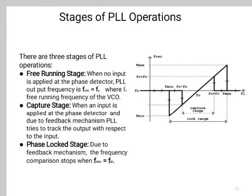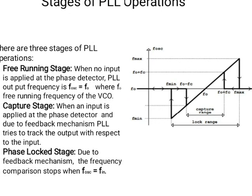Stages of PLL operation. There are three stages: free running stage, capture stage, and phase locked stage. In the free running stage, when no input is applied to the phase detector, the PLL output frequency F_oscillator equals F0, where F0 is the free running frequency of the VCO. In the capture stage, when an input is applied to the phase detector, due to the feedback mechanism, the PLL tries to track the output with respect to the input. In the phase locked stage, due to the feedback mechanism, the frequency comparison stops when F_oscillator equals FIN.